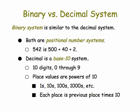The binary system is very similar to the decimal system. Both are considered positional number systems. That means that the value of a particular digit, like the digit 5 in 542, depends on its place. So 5 is in the 100's place, so it represents 500. And 4 is in the 10's place, so it represents 40.